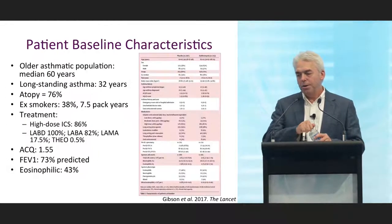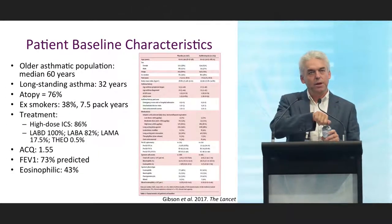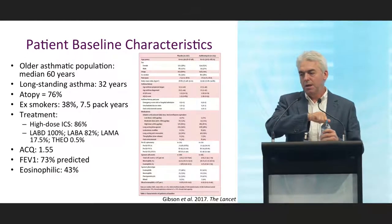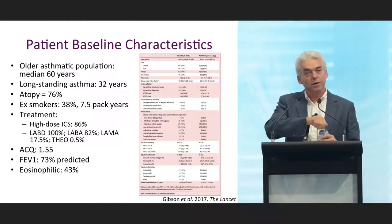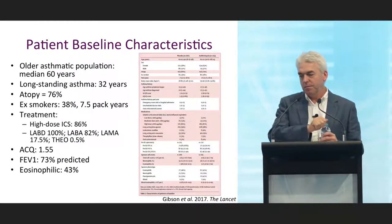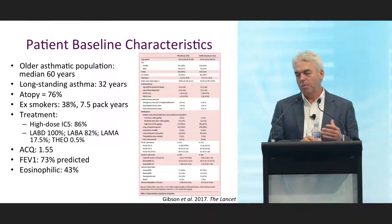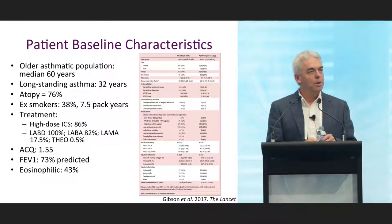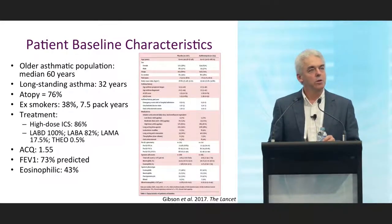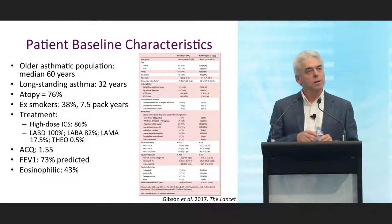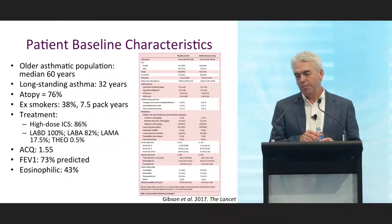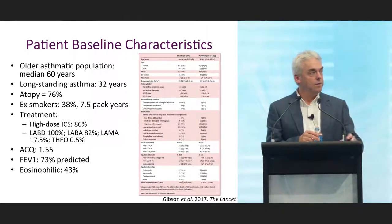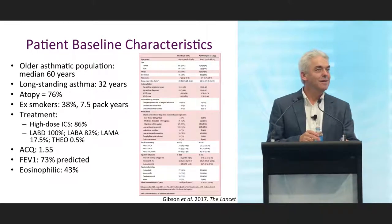This was an older population of asthmatics, with a median age of 60 years. They had long-standing atopic asthma, 38% were ex-smokers. Most — 86% — were on high-dose ICS, all were on a long-acting bronchodilator. They had poor asthma control, airflow obstruction, and about 43% had eosinophilic asthma with a corresponding number having non-eosinophilic asthma.